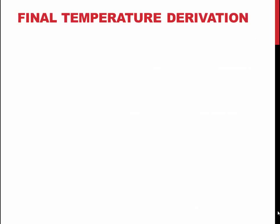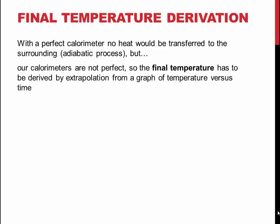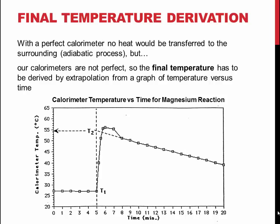The calorimeters used in this experiment will lose a certain amount of heat to their surroundings, so the temperature after the addition of magnesium has to be found by extrapolating the graph of temperature versus time. This is done by drawing a straight line from where the temperature decreases to a vertical line made at the 5-minute mark. Reading straight to the y-axis from this point gives you T2, the final temperature of the system, which you can use to find the change in temperature caused by the reaction.